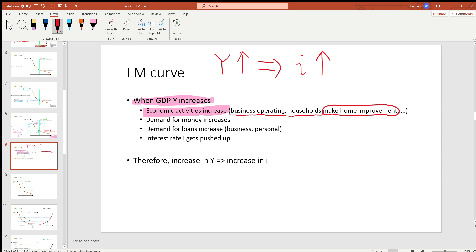To make a home purchase or to make business investments, a household and business would go to a bank and take out a loan. As a result, demand for loans increases, both at business level and at personal level.